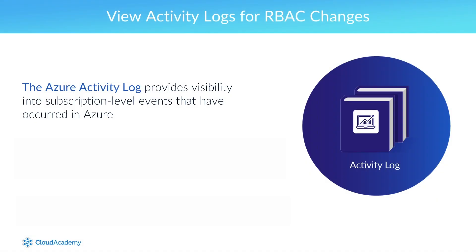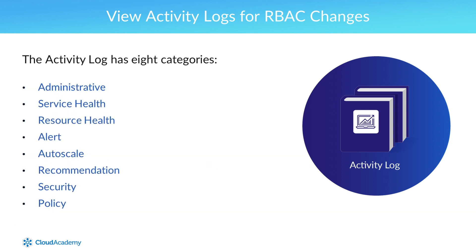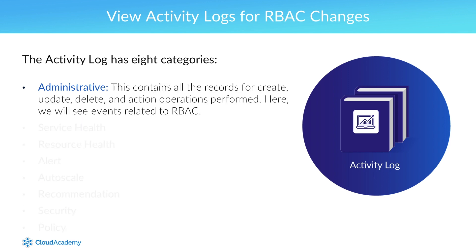The Azure Activity Log provides visibility into subscription-level events that have occurred in Azure. Using the Activity Log, you can determine what operations were taken on the resources in your subscription. The Activity Log has eight categories. Administrative will contain all the records for create, update, delete, and action operations performed. Here we will see events related to RBAC like Create Role Assignment and Delete Role Assignment.